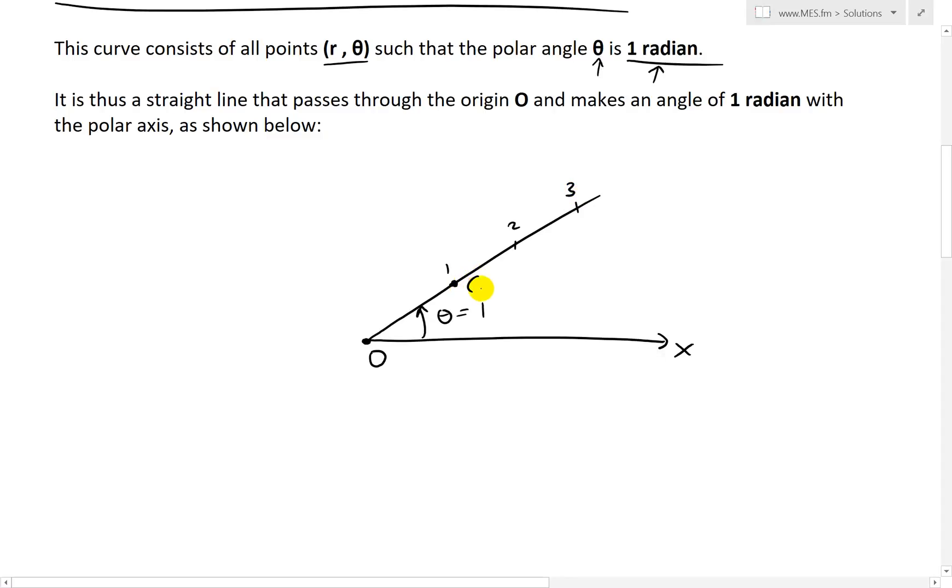So then for example, at this point, it would be (1, 1). At this point, this would be (2, 1). Or r is equal to 2, theta is equal to 1. And this one here, you could have (3, 1), etc.